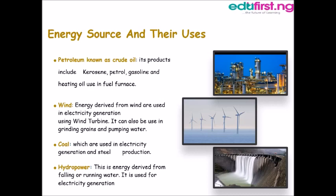We also have another source of energy which is wind. Energy derived from wind is used in electricity generation using wind turbines, and it can also be used in grinding grains and pumping water. We also have coal as another source of energy, which is used in electricity generation and in steel production.